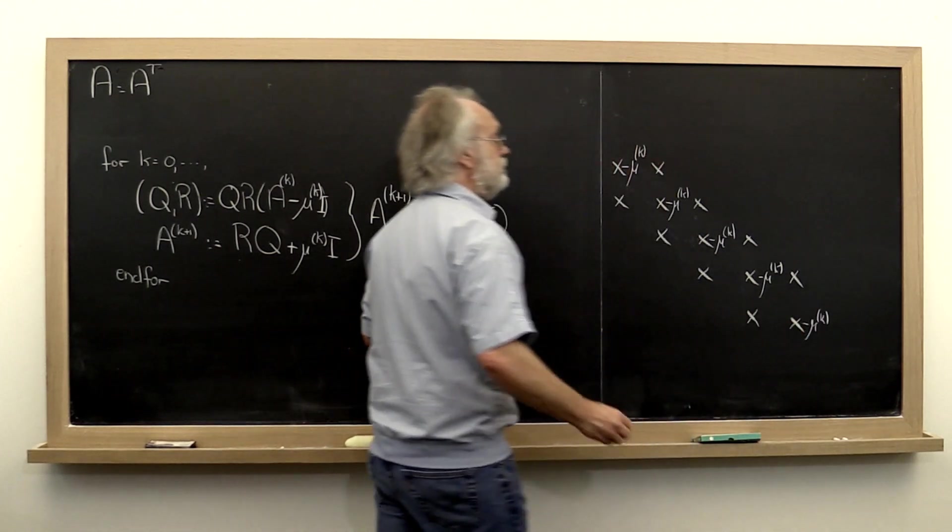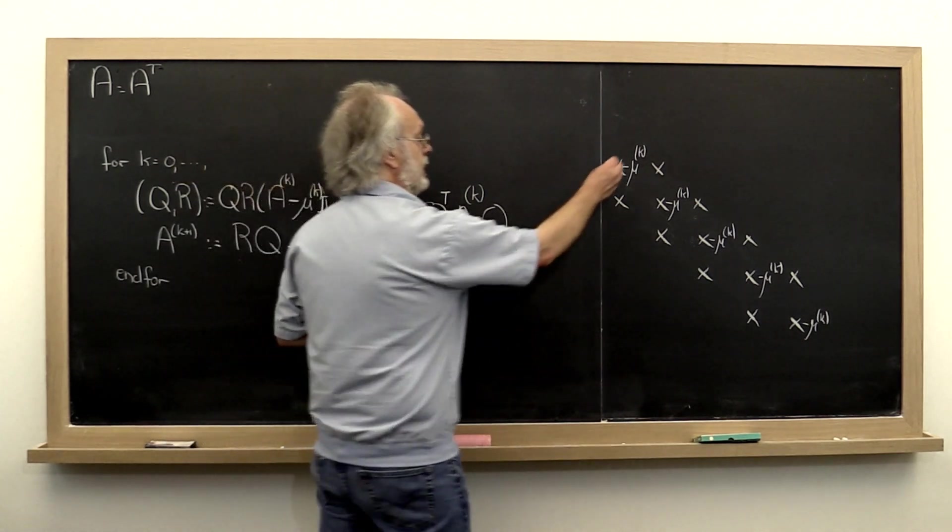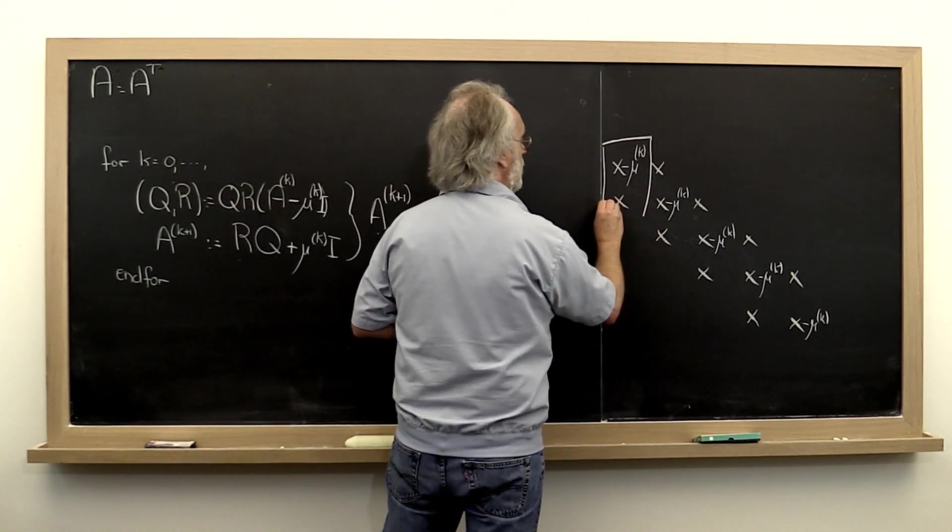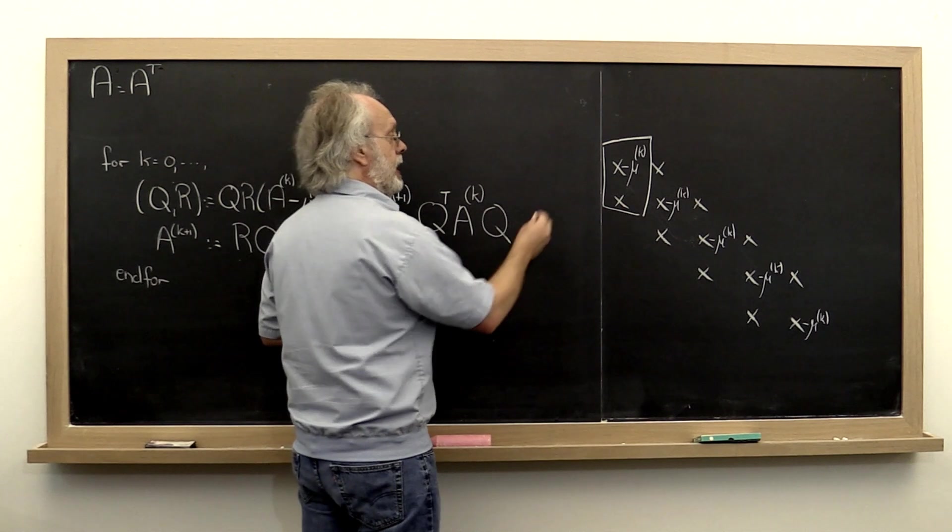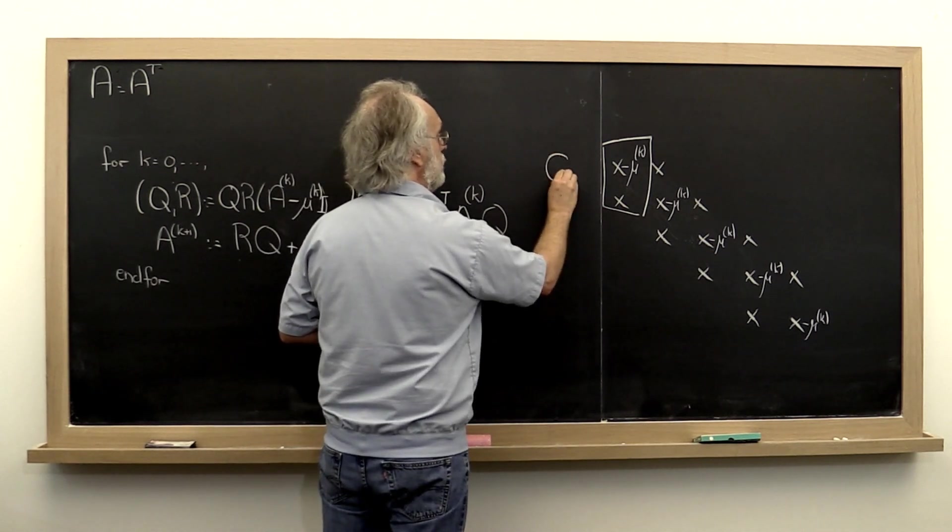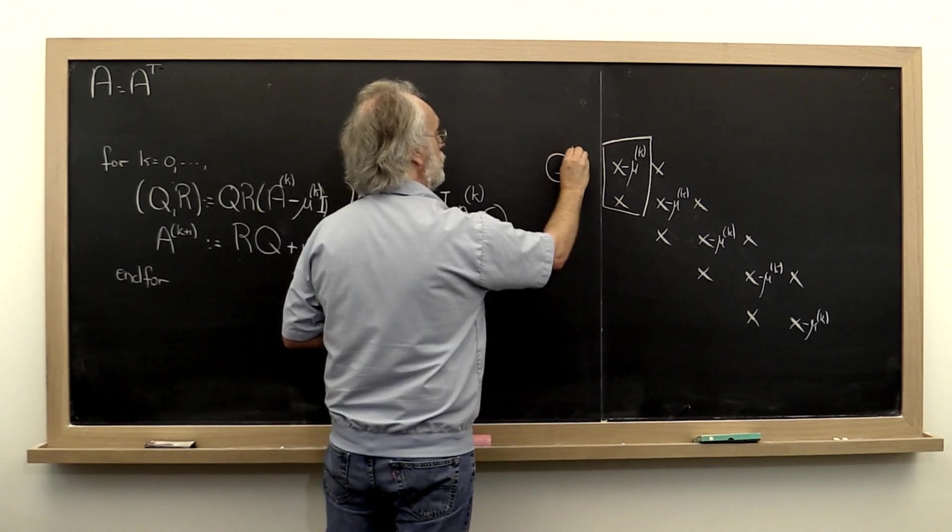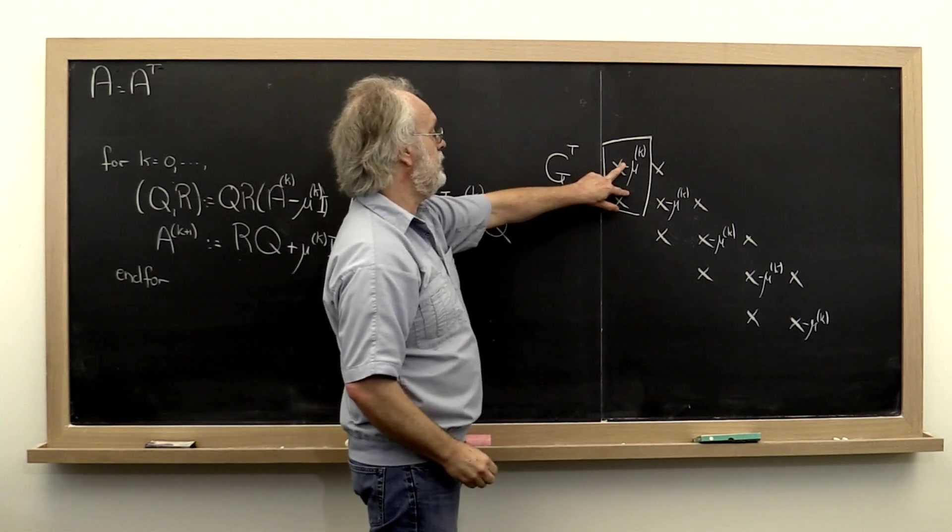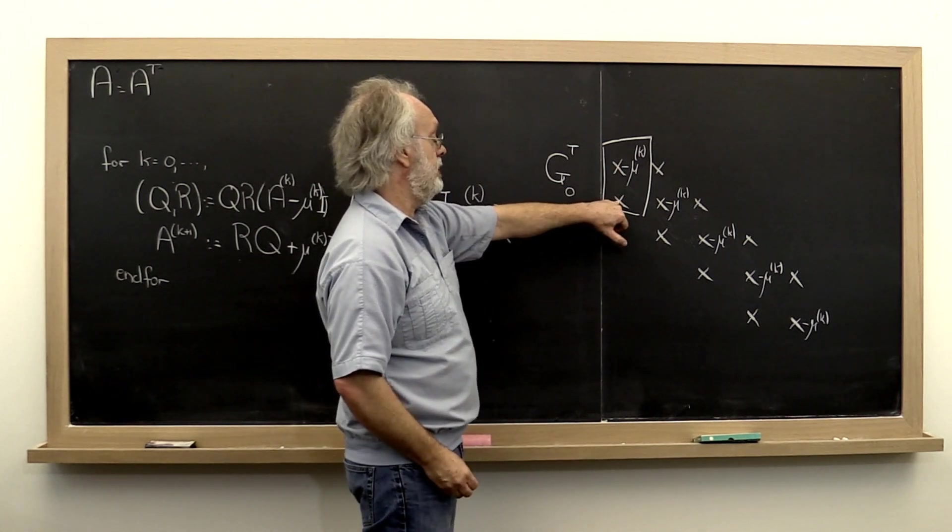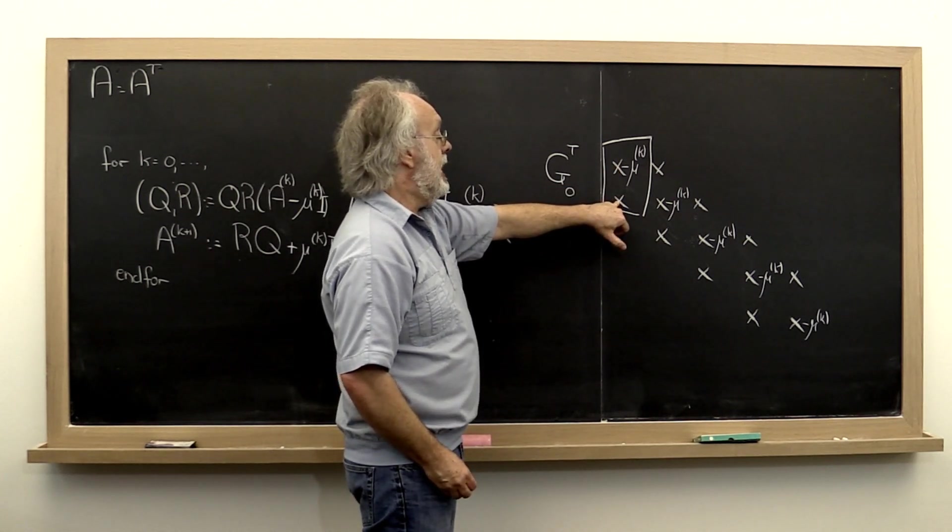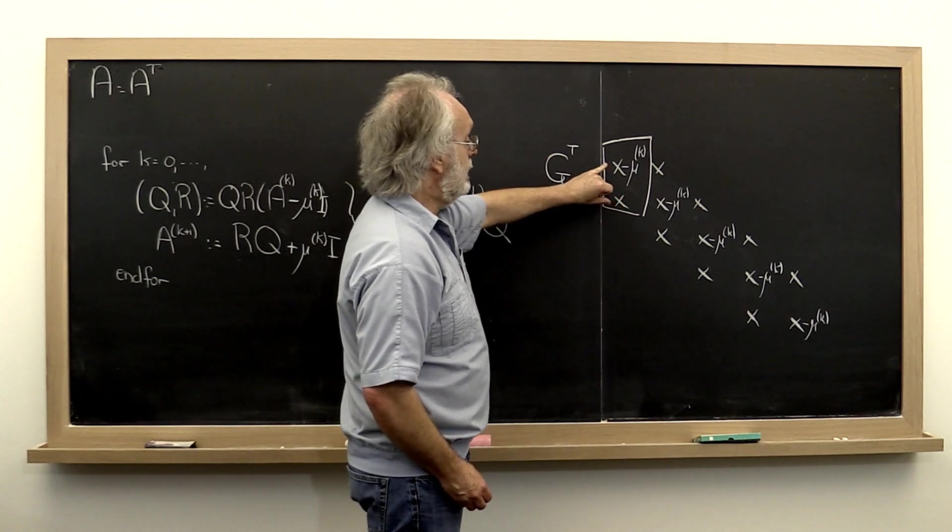And then we would look at these entries right here and compute a first Givens rotation such that G0 transpose times these two entries gives us a zero right there. Then we would apply that from the left.